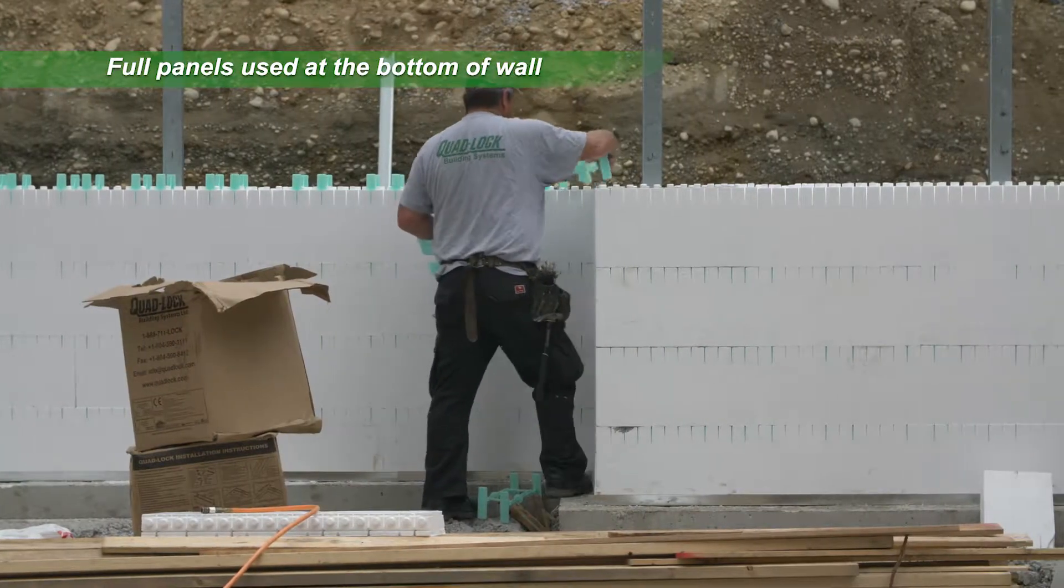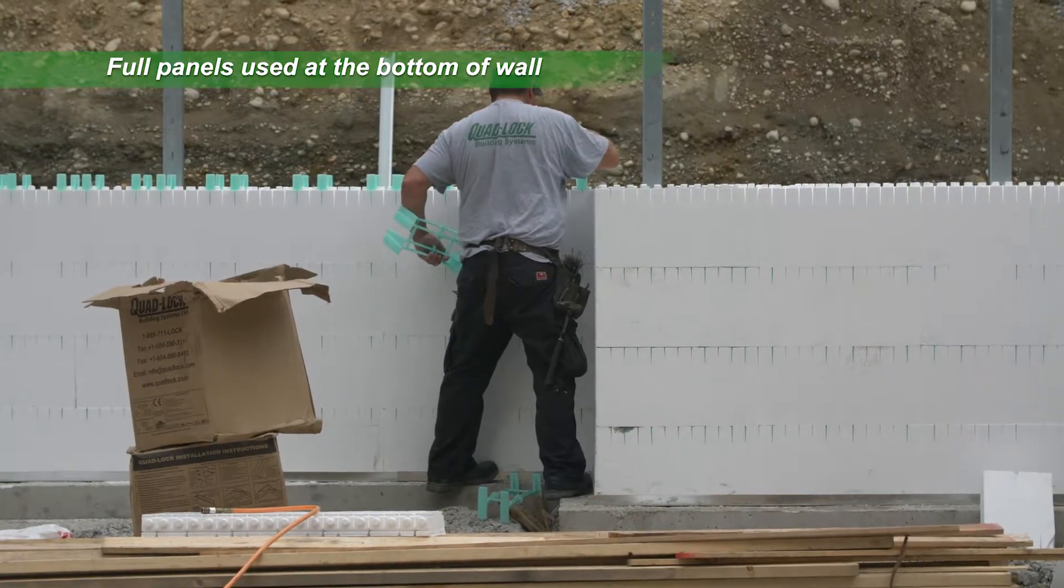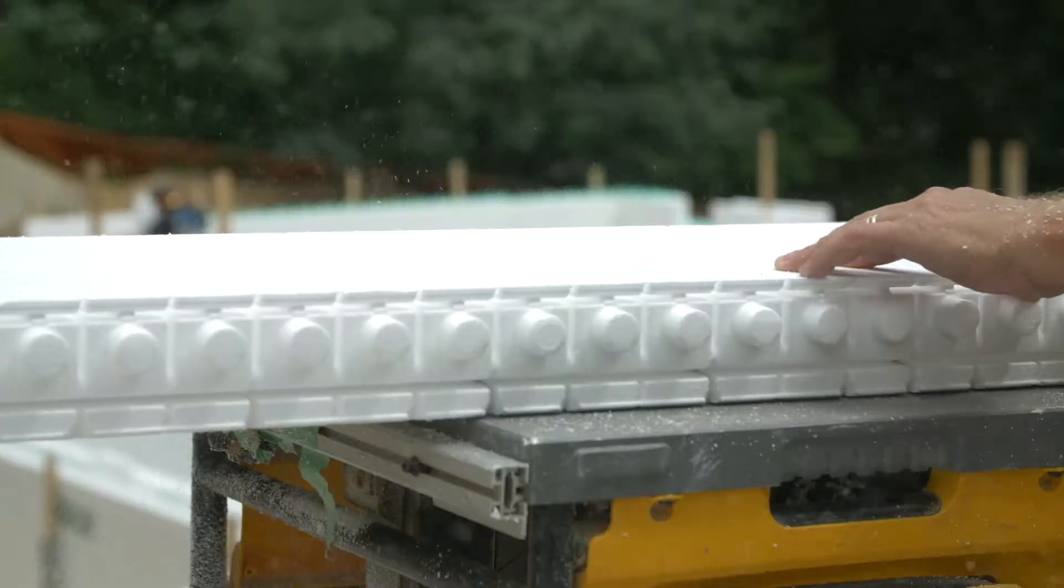If a full panel has been used at the bottom of the wall, it may be necessary to rip the top panels to yield the exact wall height.